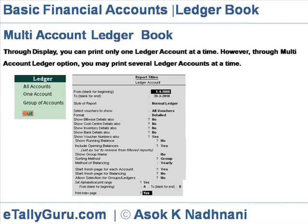Multi-Account Laser Book: Through the display, you can print only one laser account at a time. However, through the multi-account laser option, you may print seven laser accounts at a time. Select multi-account printing, account books, then laser to get the multi-account laser printing menu.